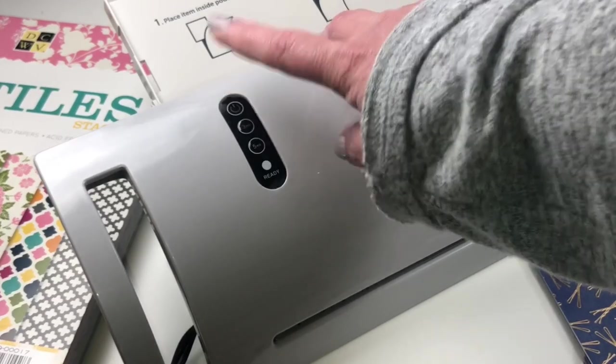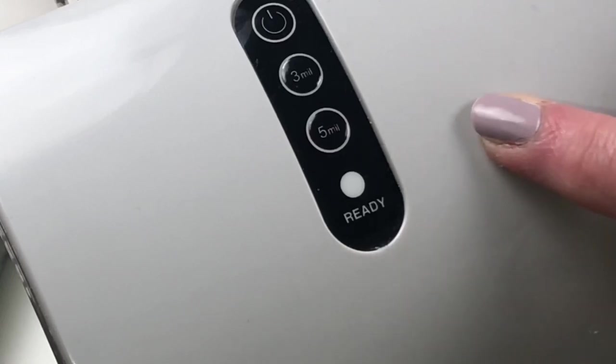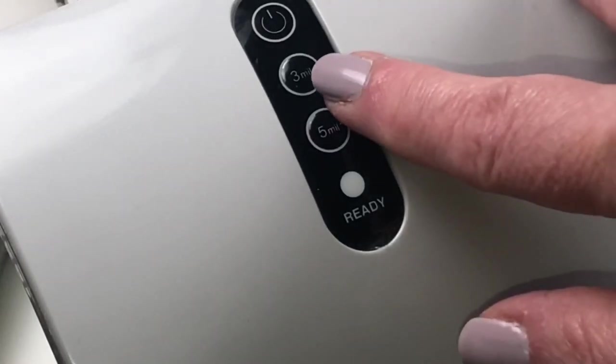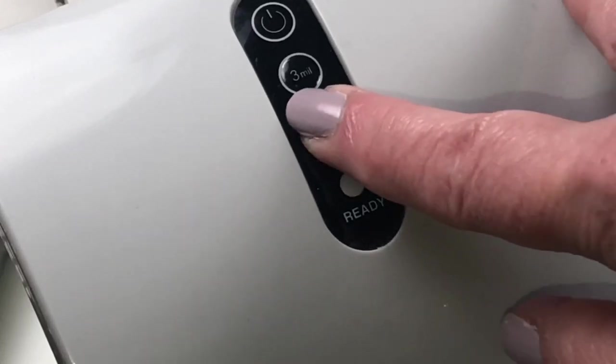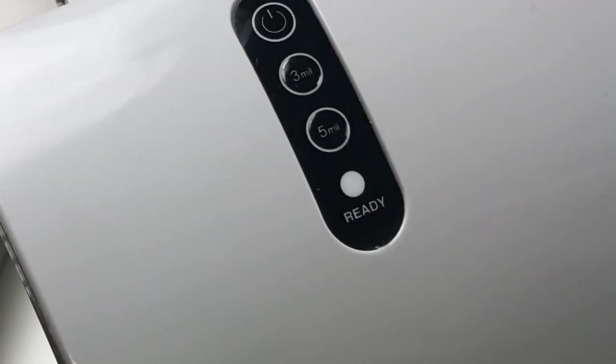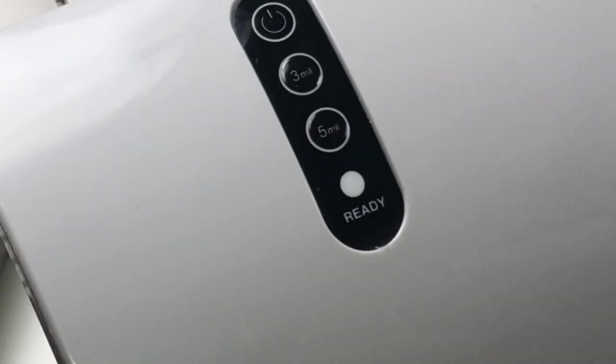You can choose 3 mil or 5 mil and that depends on the thickness of your laminating pouches. The laminating pouches I have are 3 mil but I am choosing 5 mil and it's going to warm up because I'm feeding in a folded piece of paper. Even though my laminating pouches are only 3 mil weight, I'm going to choose 5 mil just to make sure that it's extra sturdy.